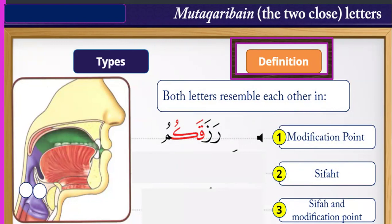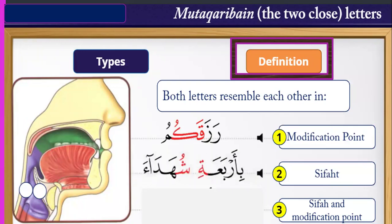قاف and كاف share the same مخرج — the sound of both of them comes from the deepest part of the tongue.